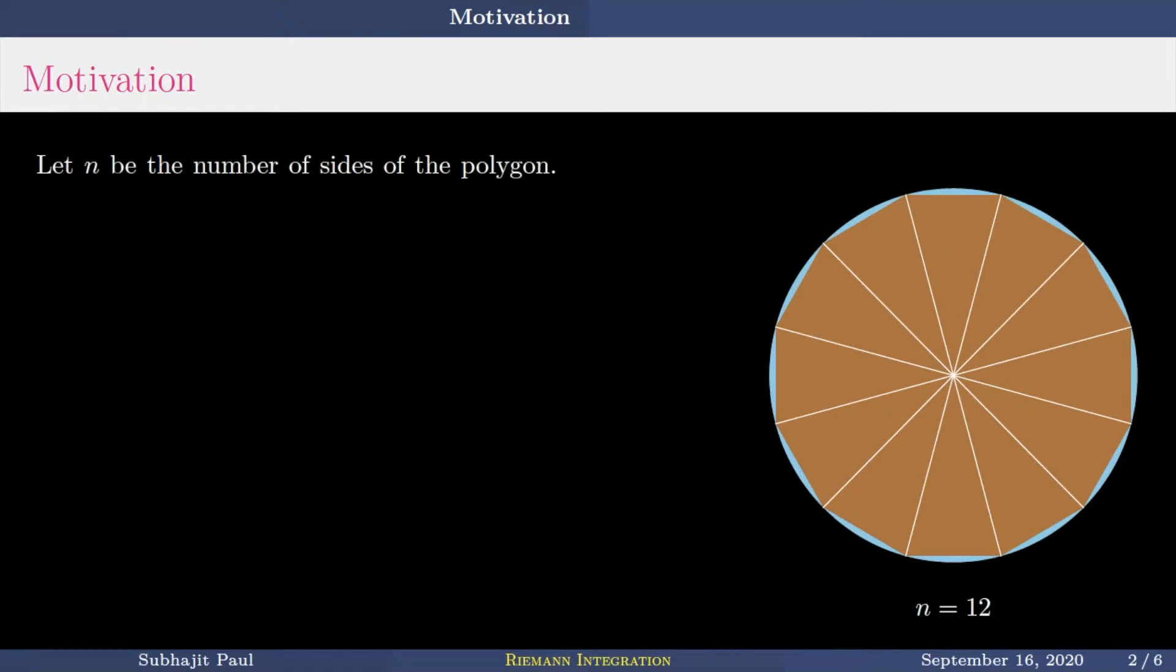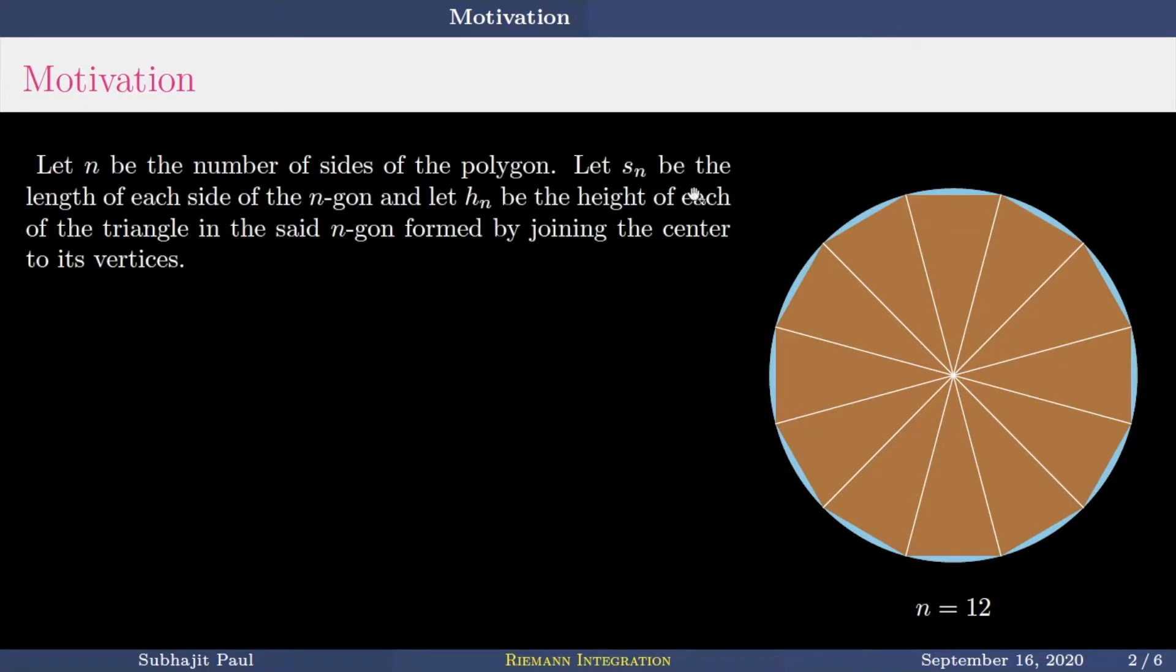So if we quickly go through the mathematics behind this, let N be the number of sides of the polygon. Then let s_N be the length of each side of the N-gon. So this is your s_N, each side of the polygon. This is a regular N-gon, so s_N is same for every side of this polygon.